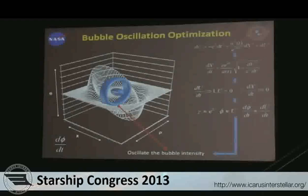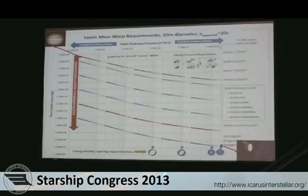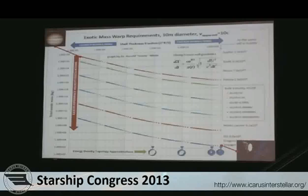The lowest previous prediction was done by Richard a couple years ago — he reduced the amount of exotic matter to something about the size of Jupiter. This is a summary of analysis presented at the last conference, for a 10-meter diameter spacecraft with an effective velocity of 10c. If you make the ring very thin, you yield a solution that requires an enormous amount of exotic matter or negative vacuum energy.